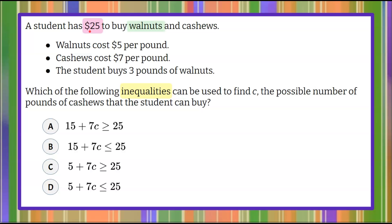So we know that the student has $25 to buy walnuts and cashews. So let's write a word sentence. Walnuts plus cashews. And then we know that it has to be less than or equal to $25. He can't spend more. They cannot spend more because they only have $25.